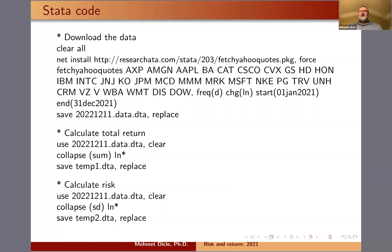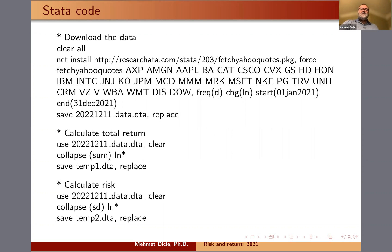This is the Stata code. You first install the fetch Yahoo quotes package to your Stata, and then you download the data. We then calculate the total return — notice the collapse sum, so it's the total return for 2021. Then we calculate the risk using collapse with the standard deviation of natural log differences of daily adjusted closing prices.